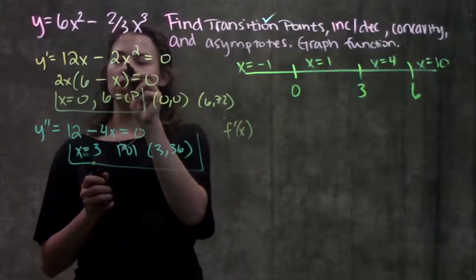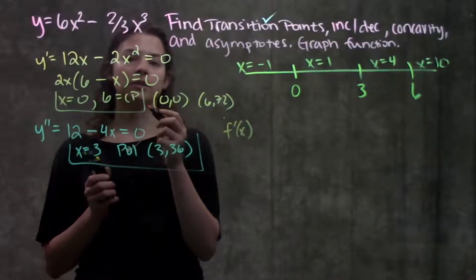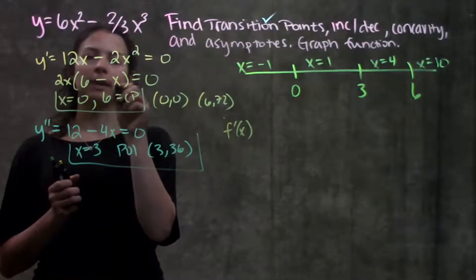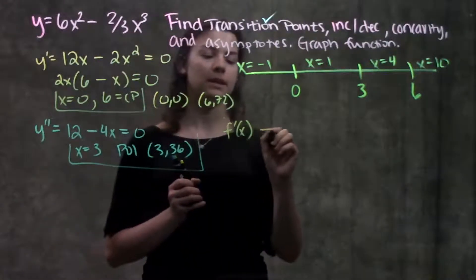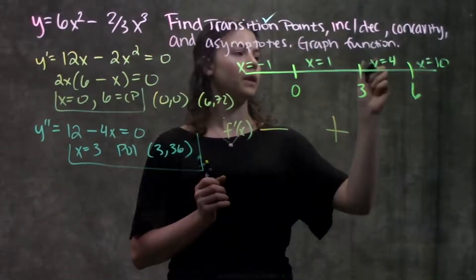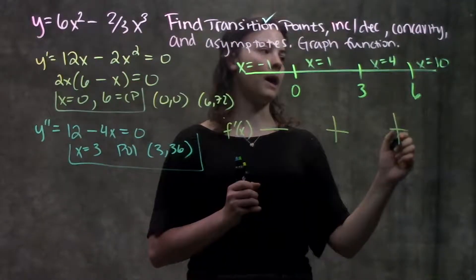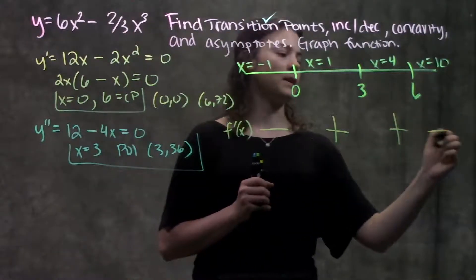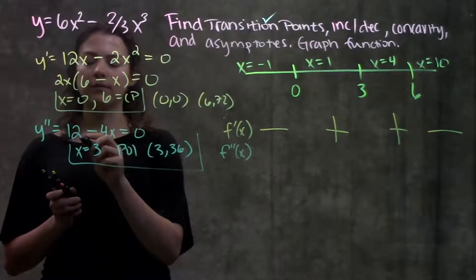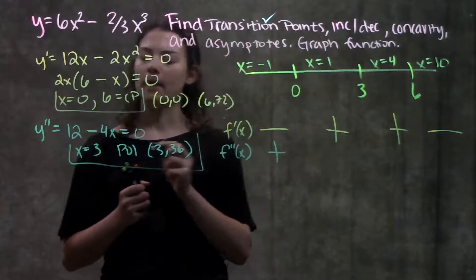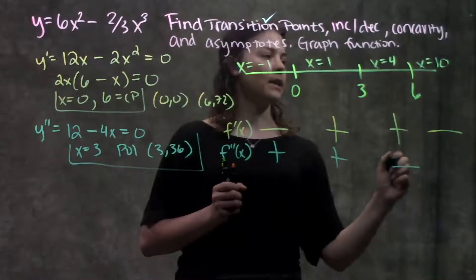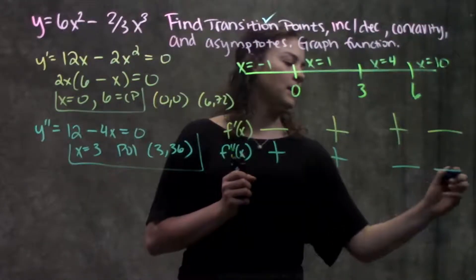Plugging negative 1 into the factored form of the first derivative: I get negative 2 times a positive number — negative times positive gives negative. Plugging in positive 1: positive times positive gives positive. Plugging in 4: positive times positive, also positive. Plugging in 10: positive times negative gives negative. For the second derivative: plugging in negative 1 gives 12 minus negative 4, which is positive. Plugging in 1 gives positive. Plugging in 4 gives 12 minus 16, which is negative. Plugging in 10 gives 12 minus 40, also negative.